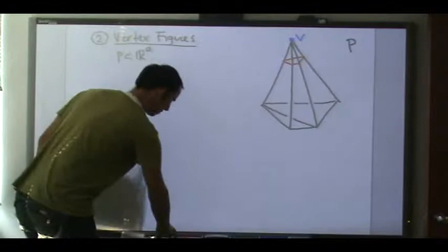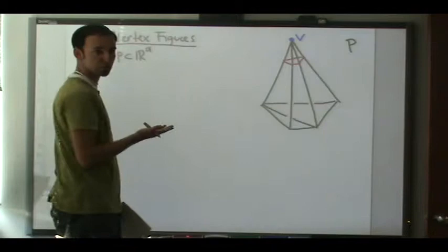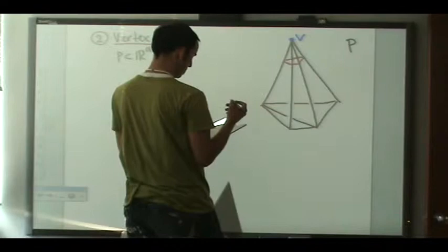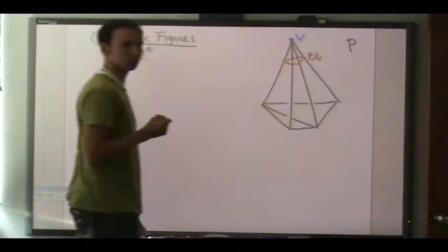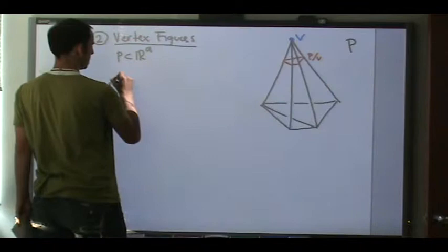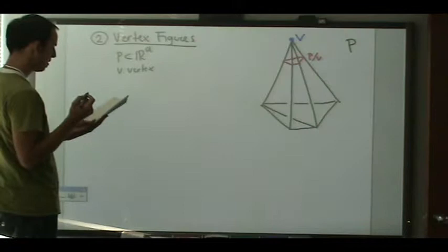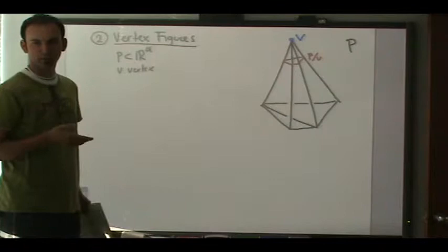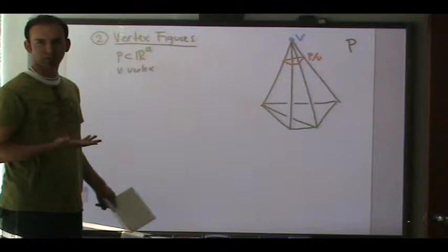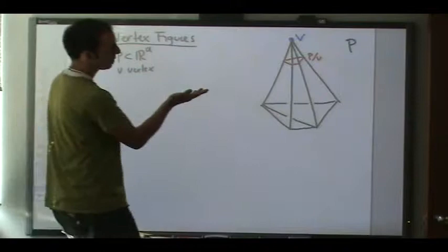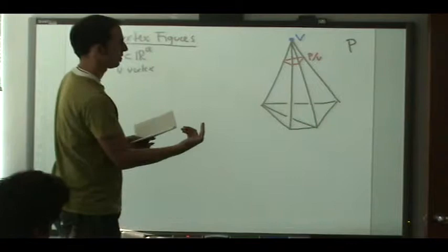That little polytope, which lives in one dimension smaller, is called the vertex figure and we denote it p mod v. Here v is a vertex. Now, how do we make precise that I'm making a cut? There's a lot of freedom, but if you make different cuts close to the vertex it doesn't really matter. What we do is choose a linear function that maximizes v — since v is a vertex we can find it.